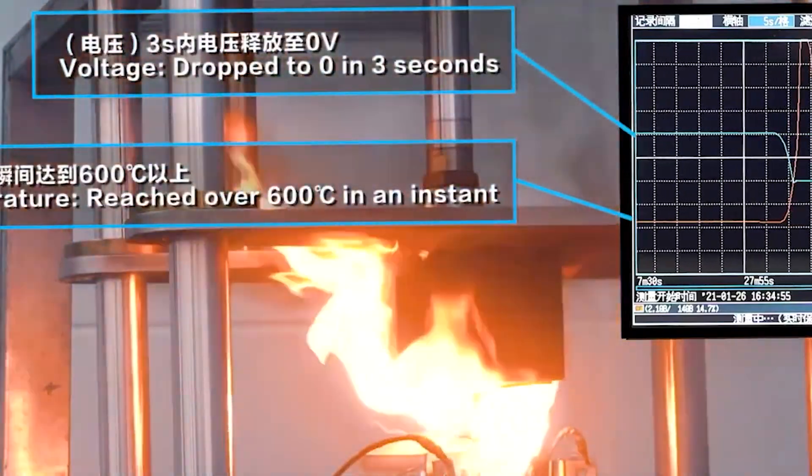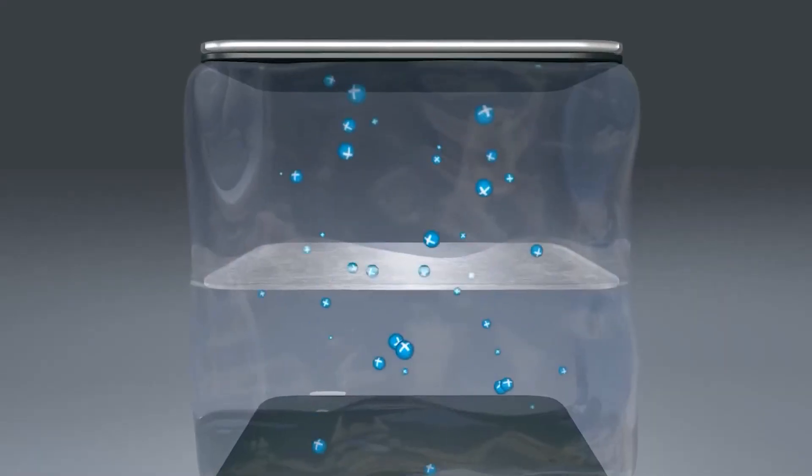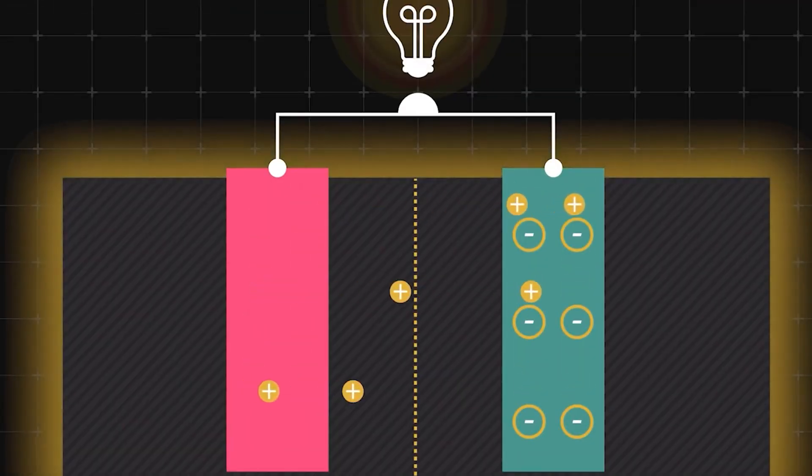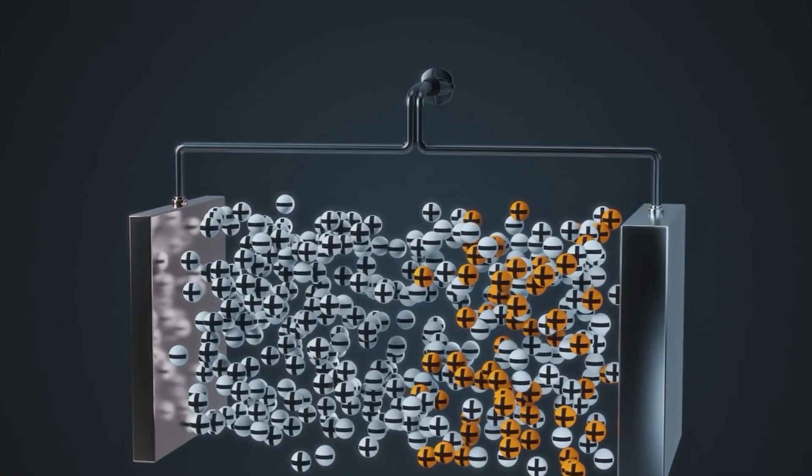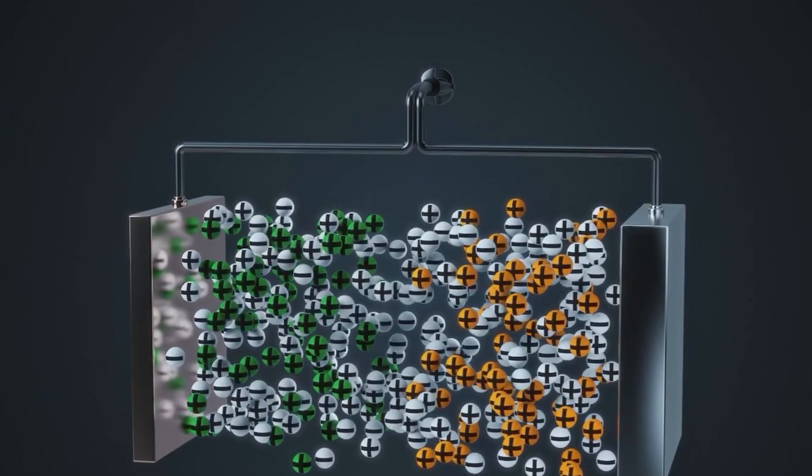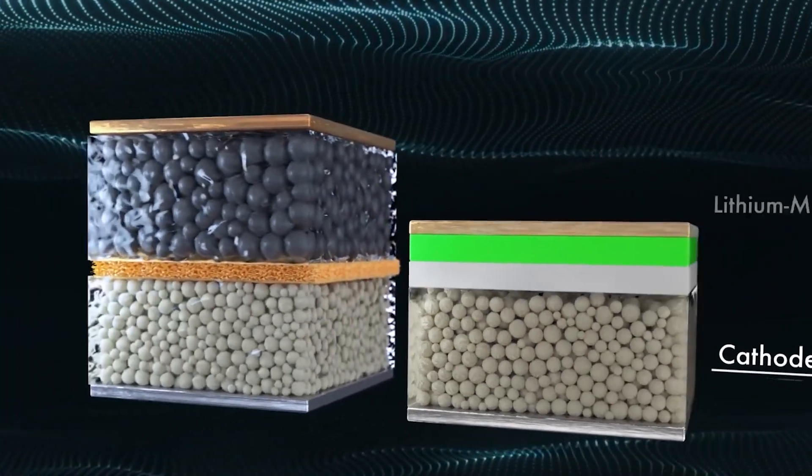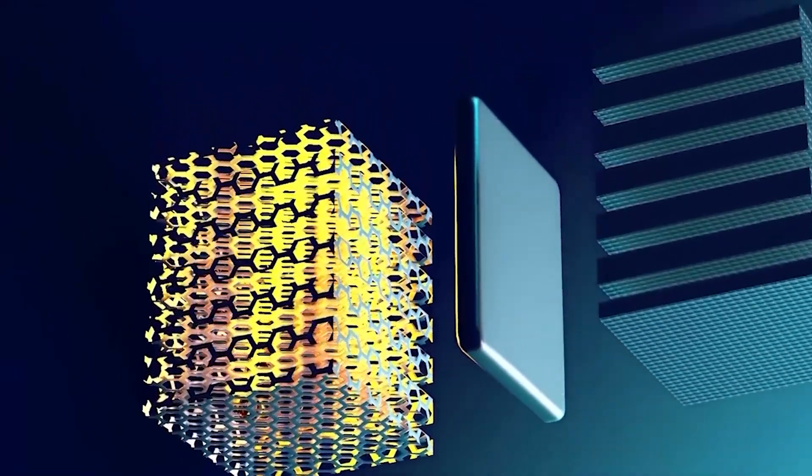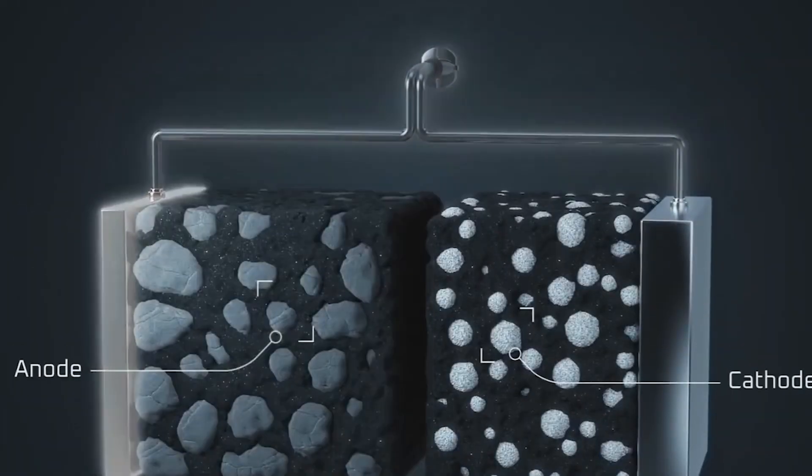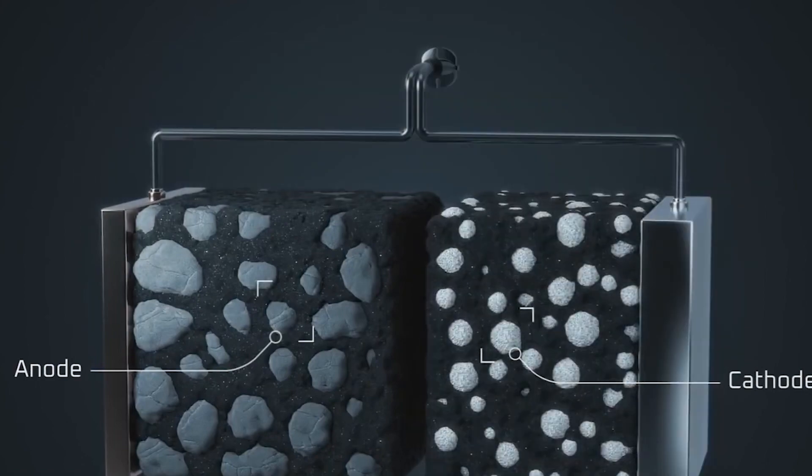Offering EVs far greater range on a single charge, solid-state batteries can be manufactured in more compact shapes due to their higher energy density. This prevents the expansion and contraction that causes deterioration in lithium-ion batteries, and automobiles will be able to charge more quickly as a result.